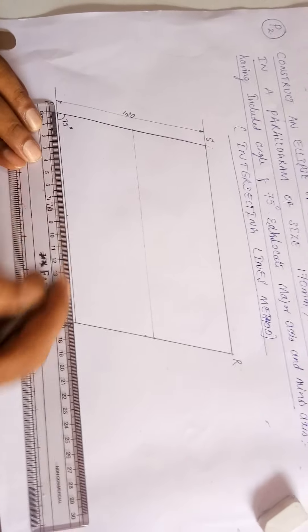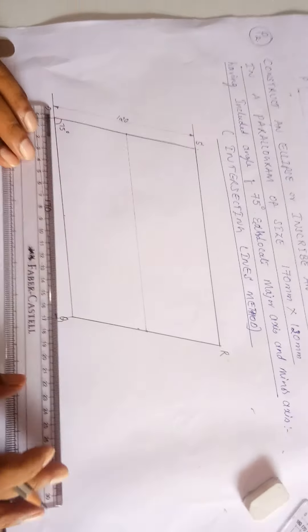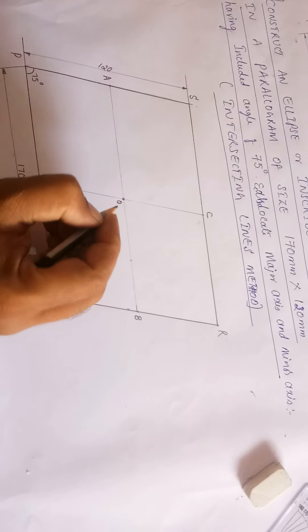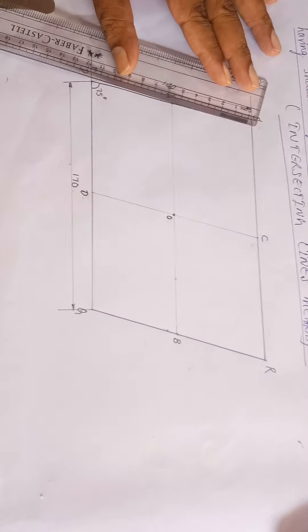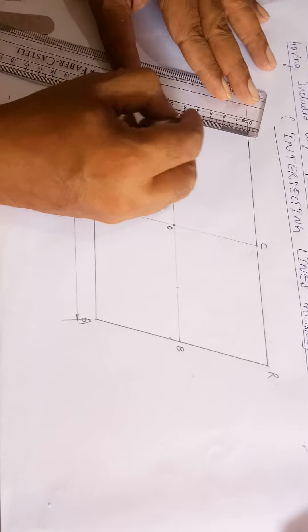Let us see how to solve this problem. It is almost like what we did for the rectangle method. In the rectangle method we divided and intersected lines — the same method we have to follow here, but we are inscribing it in a parallelogram. This method is also called the intersecting lines method.